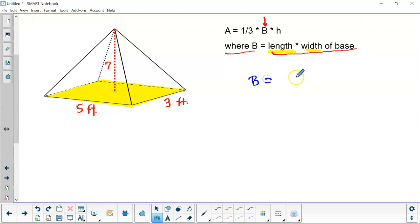In this case, it would be 5 times 3. So we have to find the area of our big B. Okay? And that's going to be 5 times 3 equals 15. And that is square feet. Okay? So now we have our big B that we can plug into our original formula.